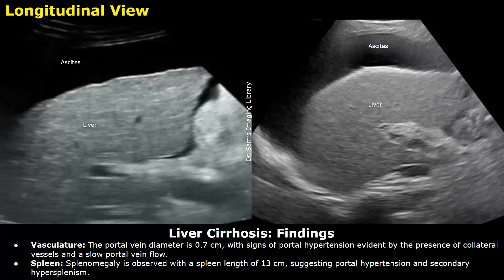Vasculature: the portal vein diameter is 0.7 centimeters, with signs of portal hypertension evident by the presence of collateral vessels and slow portal vein flow. Spleen: splenomegaly is observed with a spleen length of 13 centimeters, suggesting portal hypertension and secondary hypersplenism.